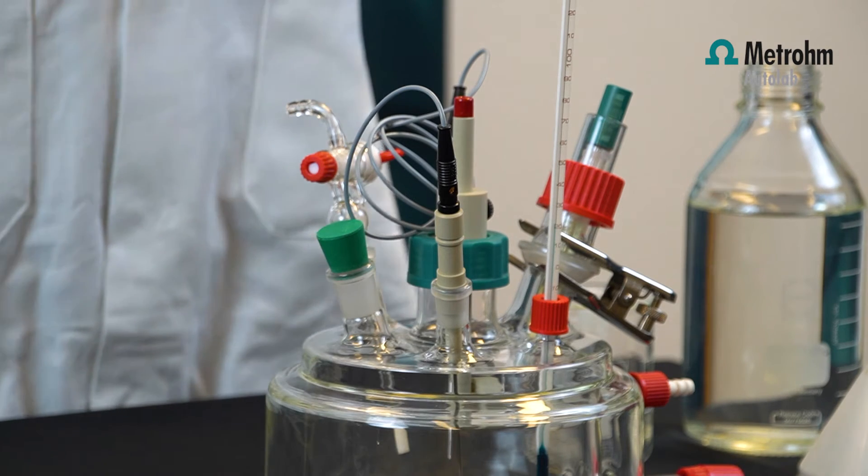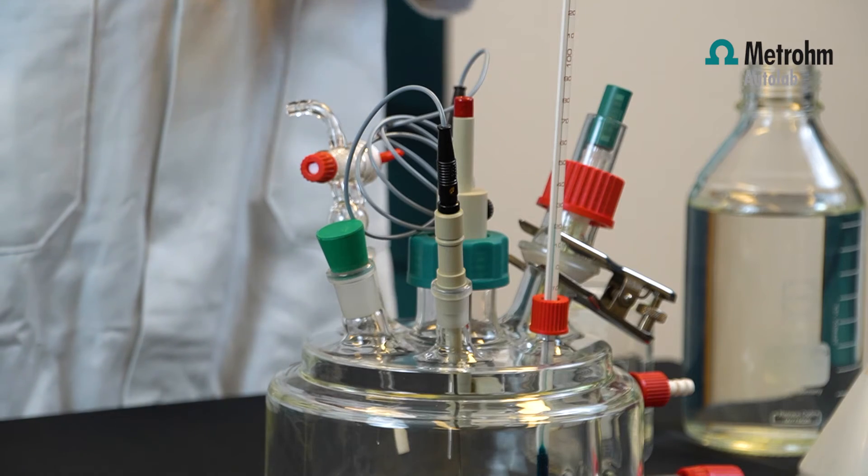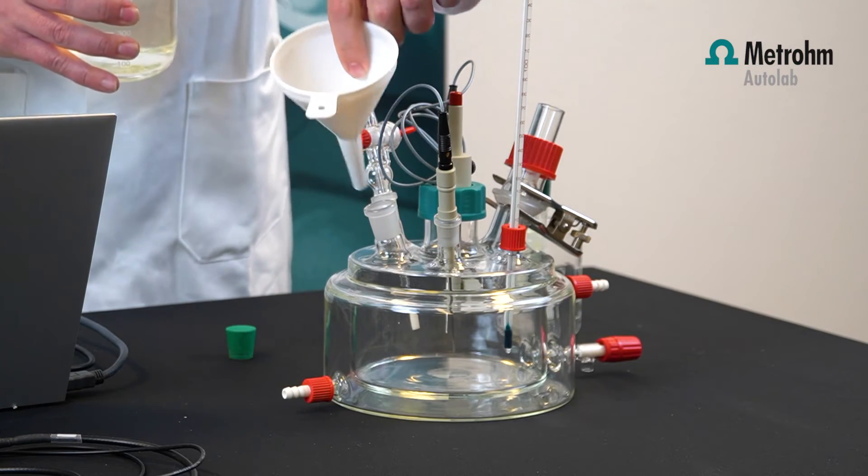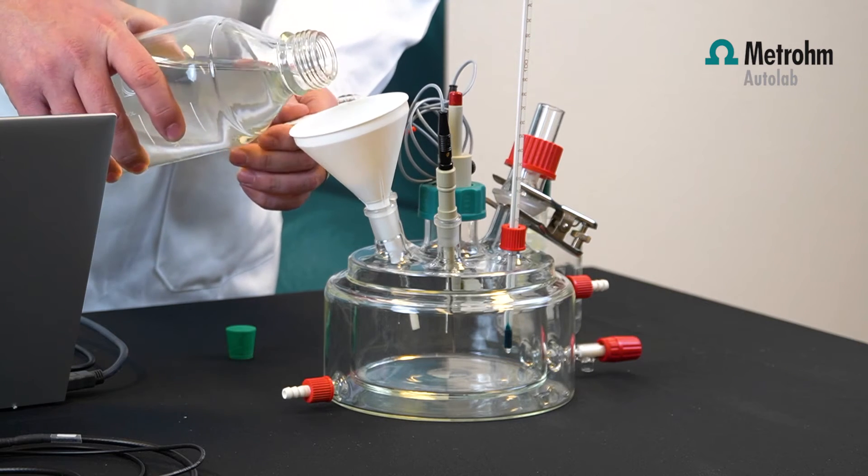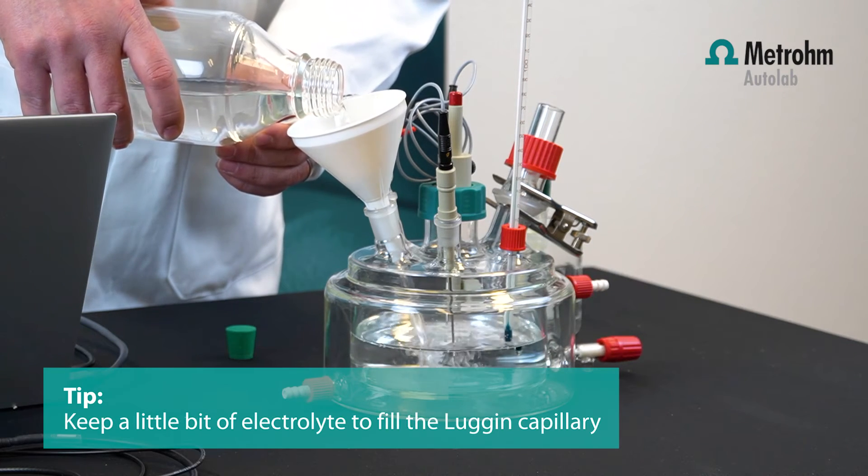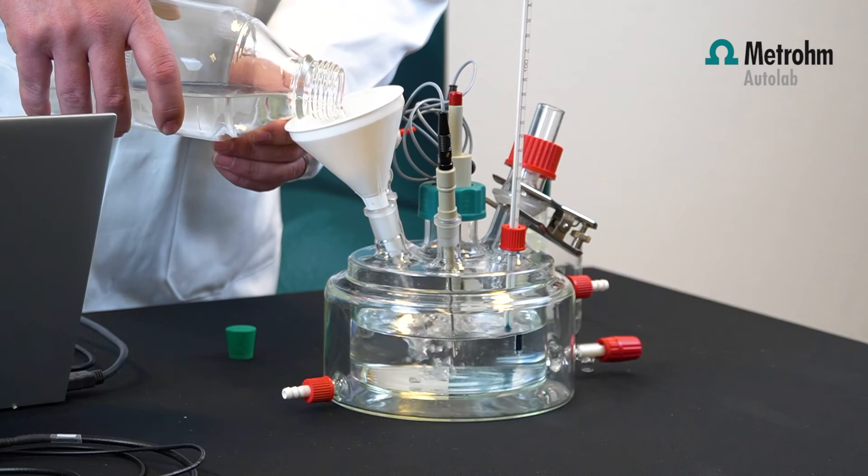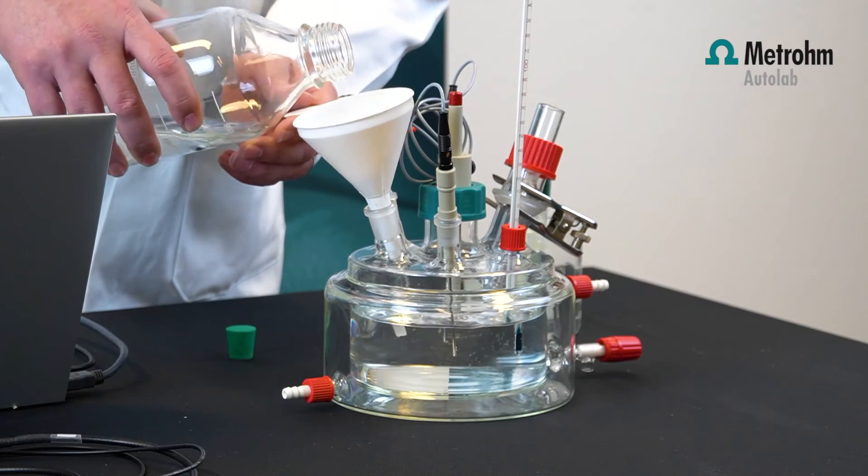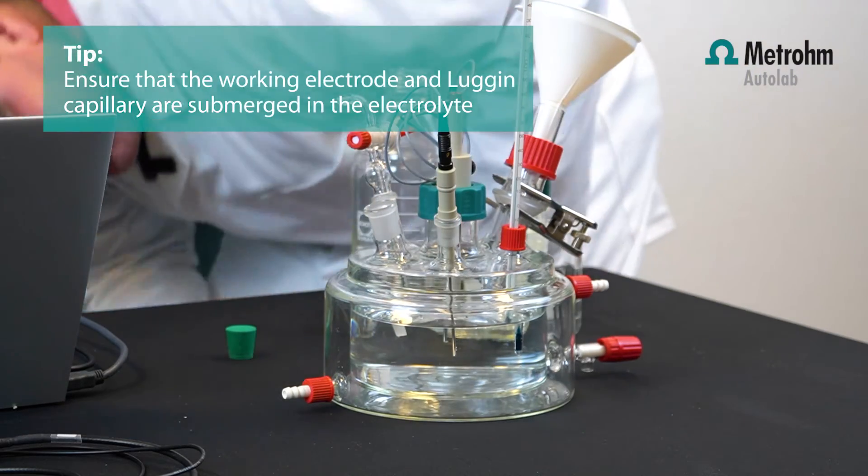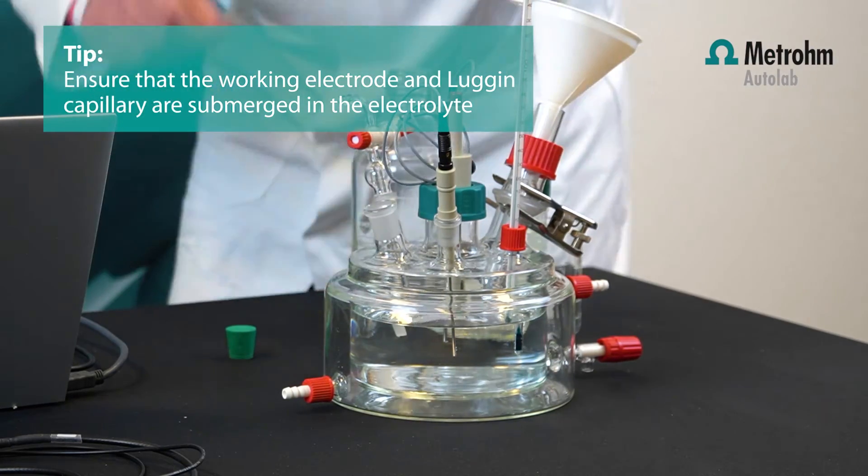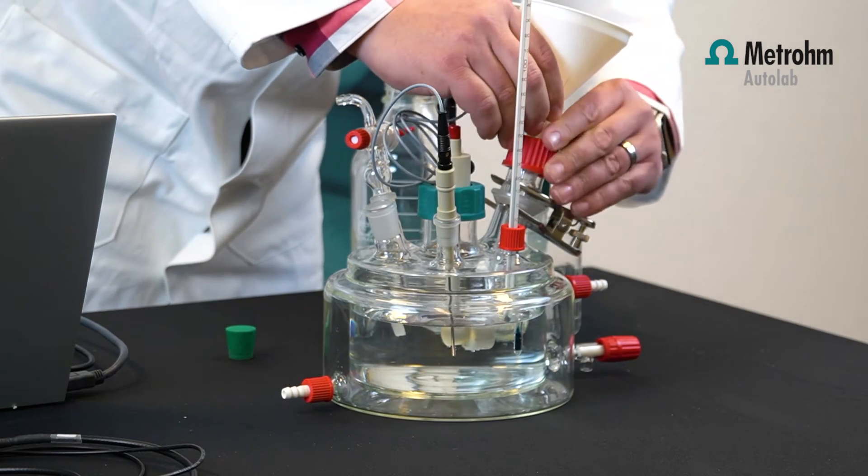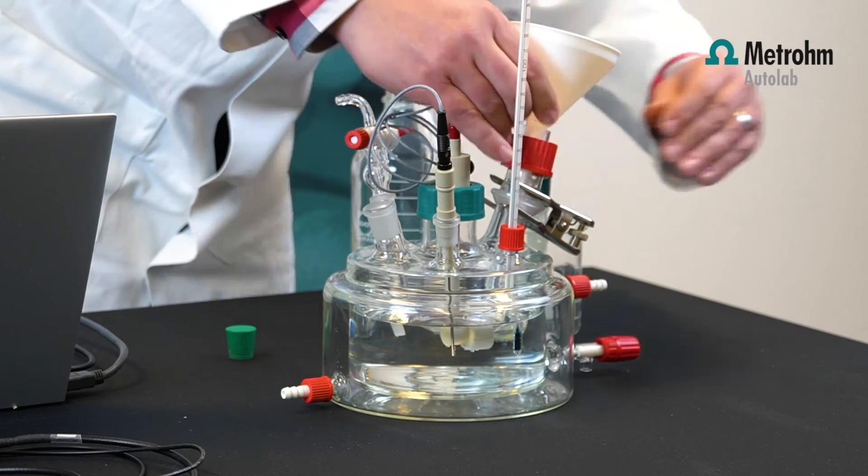The electrolyte is going to be seawater which is a sodium chloride solution. We're going to fill the cell with this seawater. Fill the corrosion cell with one liter seawater. Put a funnel inside the corrosion cell and just pour roughly one liter electrolyte in the cell. Be sure you keep a little bit left over for the Luggin capillary.